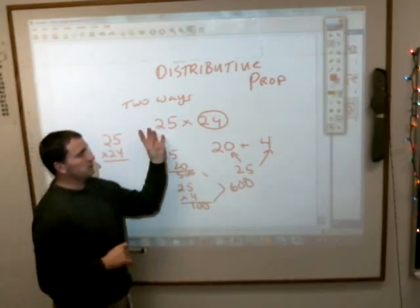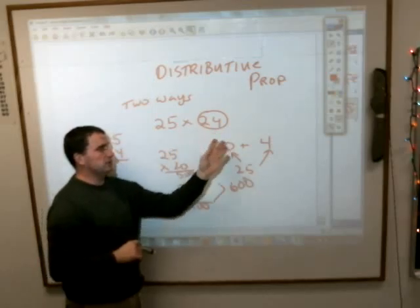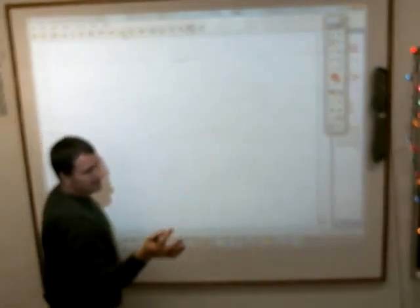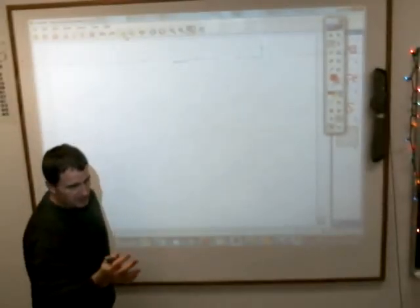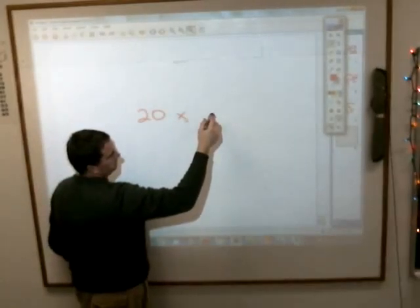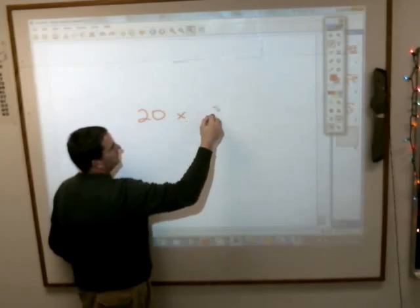Okay, in other words, you can distribute out the 25 and multiply it by one part of the number, and then distribute it out to that. Let's do another one. And it works best with 25 because 25s are easy numbers to work with, that's probably why they do it. What if it was 20 times, I don't know, maybe 35.